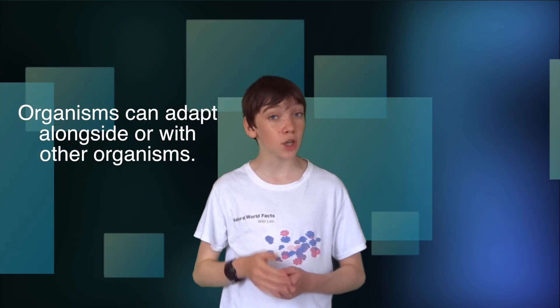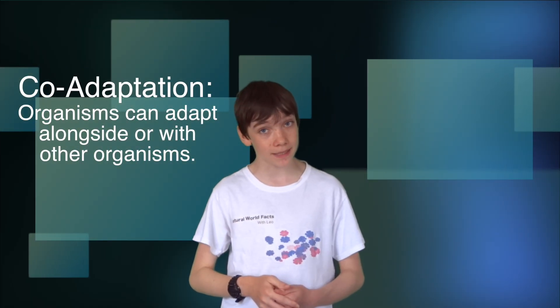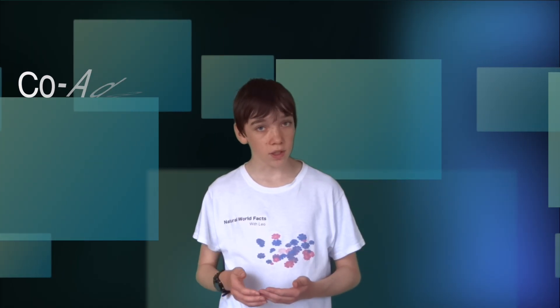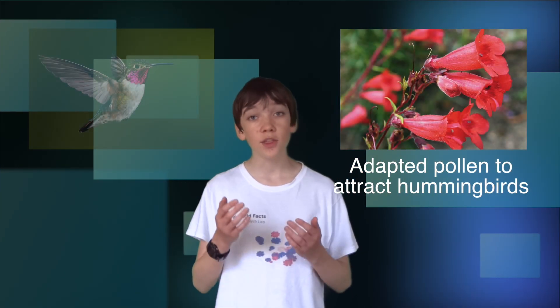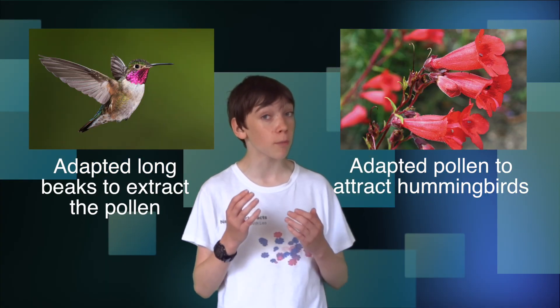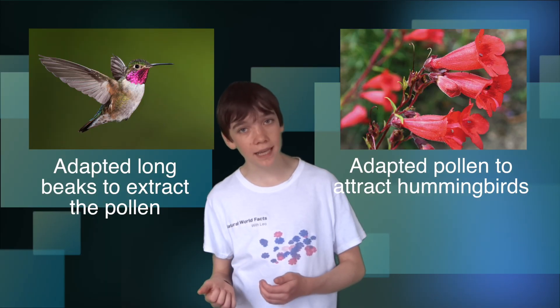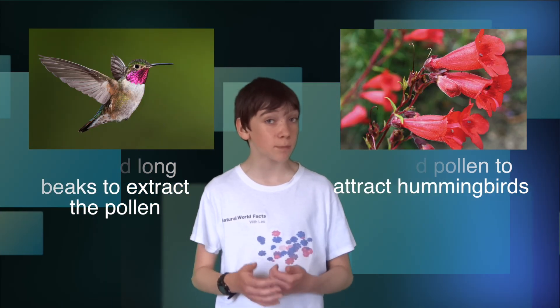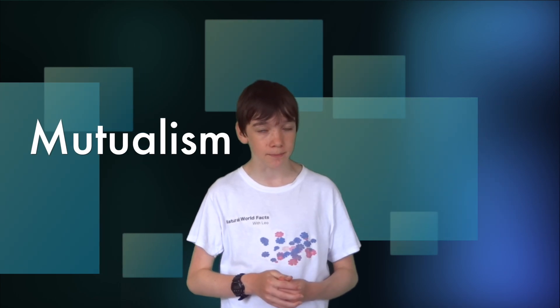Organisms can sometimes adapt alongside or with other organisms. This is known as co-adaptation. For example, certain flowers have adapted their pollen to attract hummingbirds. The hummingbirds have adapted long thin beaks to help extract the pollen from those flowers. In this relationship, the hummingbird gets food, and in return the plant's pollen is distributed. This co-adaptation is beneficial to both organisms, and is also a type of symbiotic relationship called mutualism.